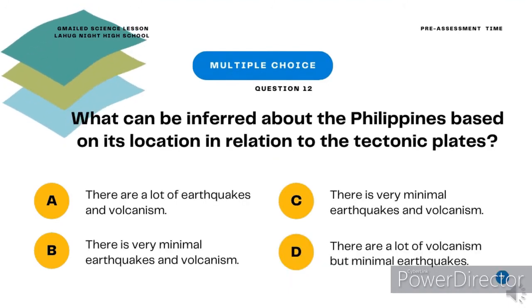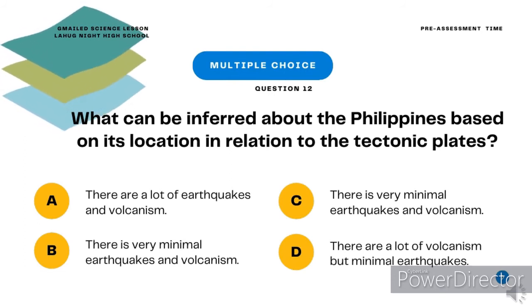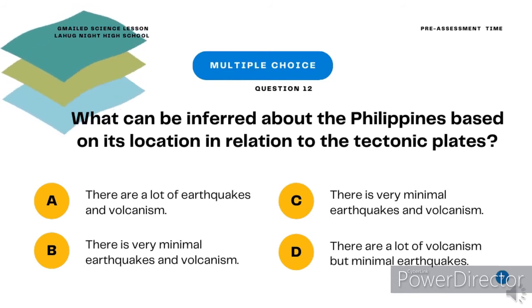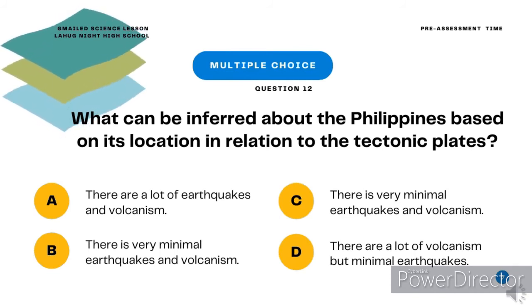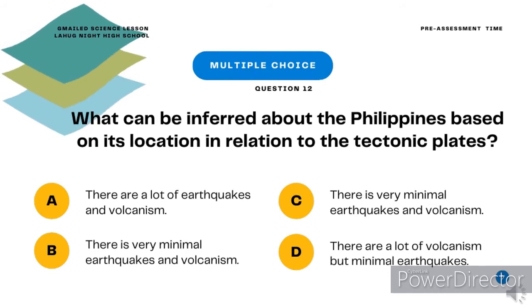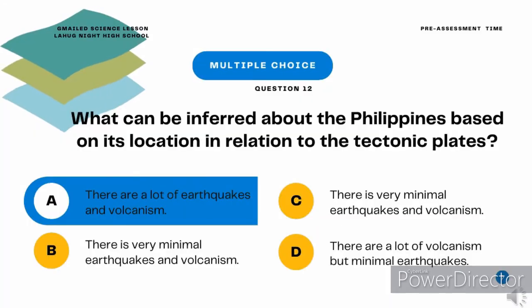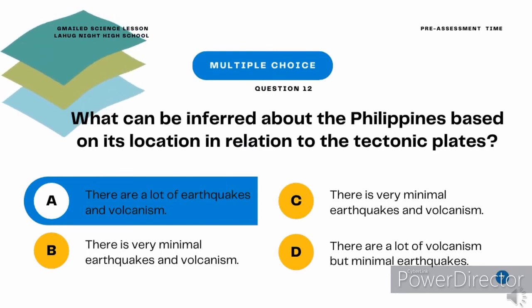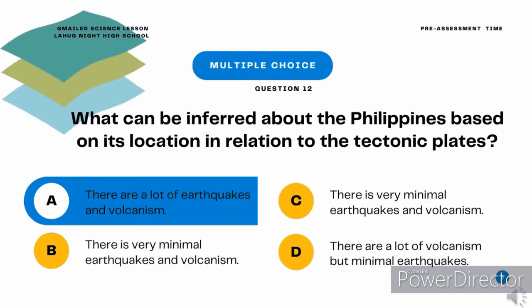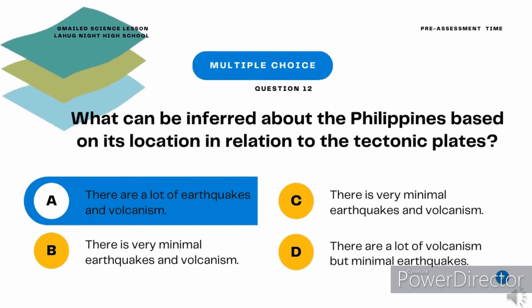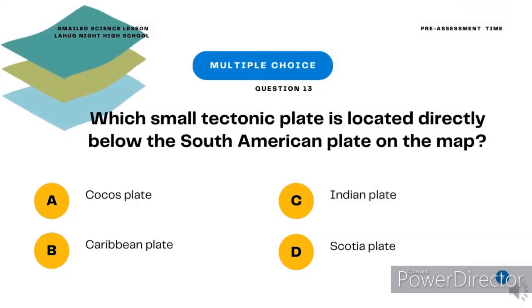Multiple choice question 12. What can be inferred about the Philippines based on its location in relation to the tectonic plates? A. There are lots of earthquakes and volcanism. B. There is very minimal earthquakes and volcanism. C. There are lots of volcanism but minimal earthquakes. D. There are lots of earthquakes but minimal volcanism. The correct answer is letter A: there are lots of earthquakes and volcanism.